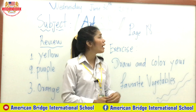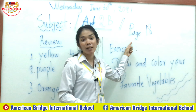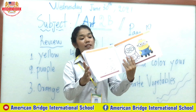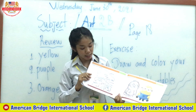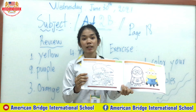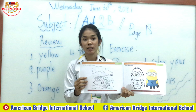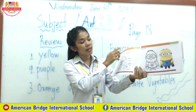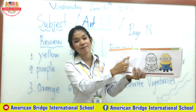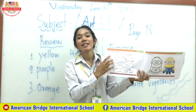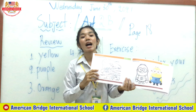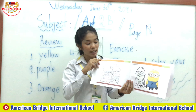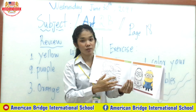Now everyone, let's open your art book on page 18 together. On page 18 you have to color the picture. Do you know what these are? Yes, these are vegetables!